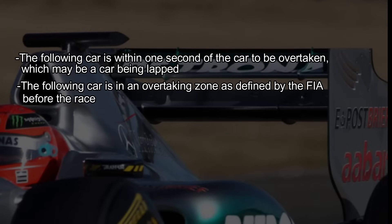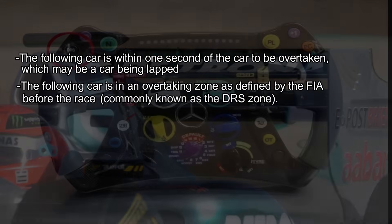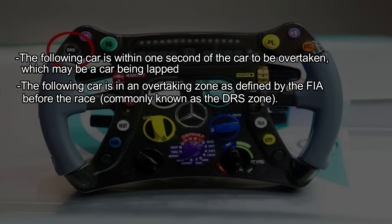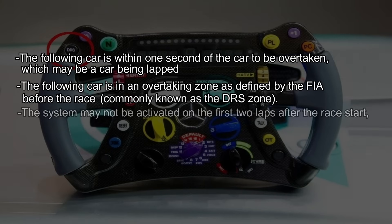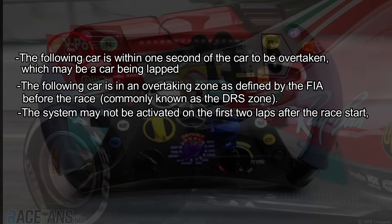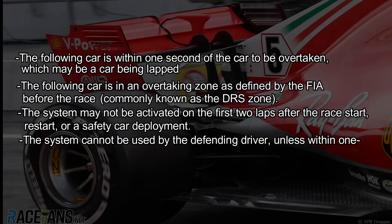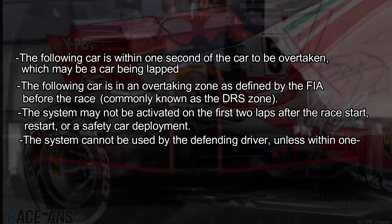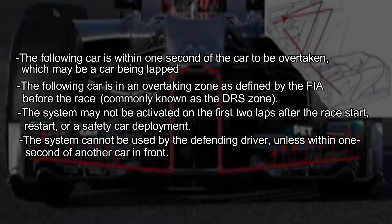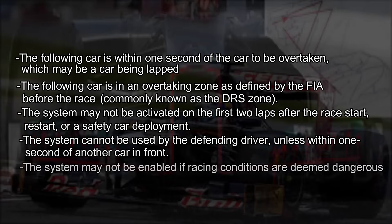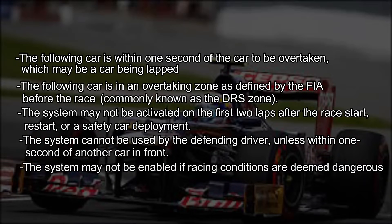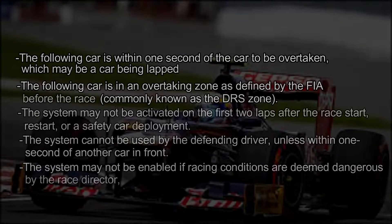This overtaking zone is typically referred to as the DRS zone. DRS may not be activated on the first two laps after the race start, restart, or safety car deployment. The system cannot be used by the defending driver unless within one second of another car in front. In addition, DRS may not be enabled if racing conditions are deemed dangerous by the race director, such as in heavy rain.